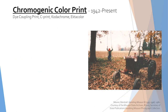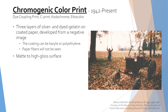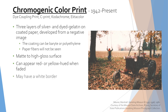Chromogenic color prints were invented in 1942 and are still very popular today. These are what most people would think of when picturing a photograph. They are made from three layers of silver and dyed gelatin on coated paper, which are then developed together from a negative image. The paper coating can be barite or polyethylene, and the paper fibers will not be seen through either coating. The surface can range from matte to high gloss. Chromogenic prints can appear red or yellow-hued when faded. Older chromogenic prints are more prone to fading, while modern prints have better color stability. They may have a white border around the image and will often have a manufacturer or photo processor stamp on the back.